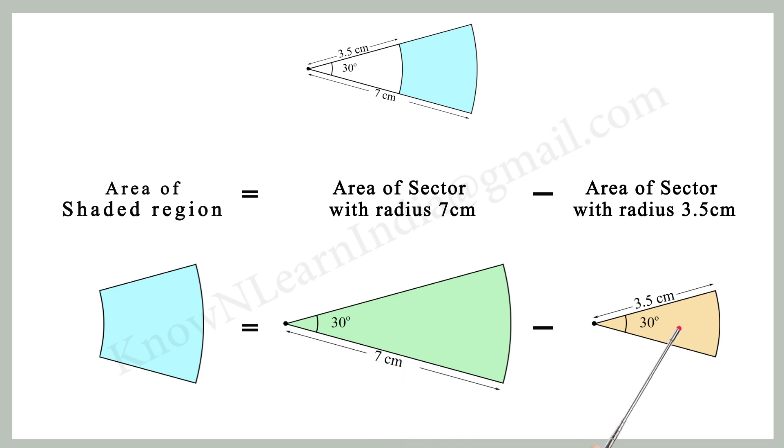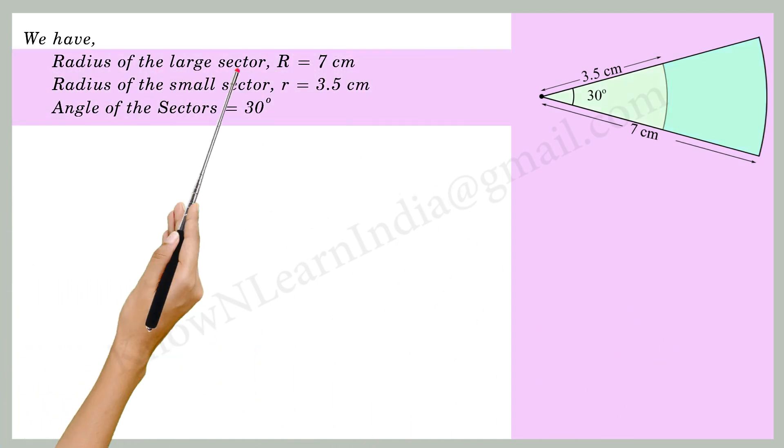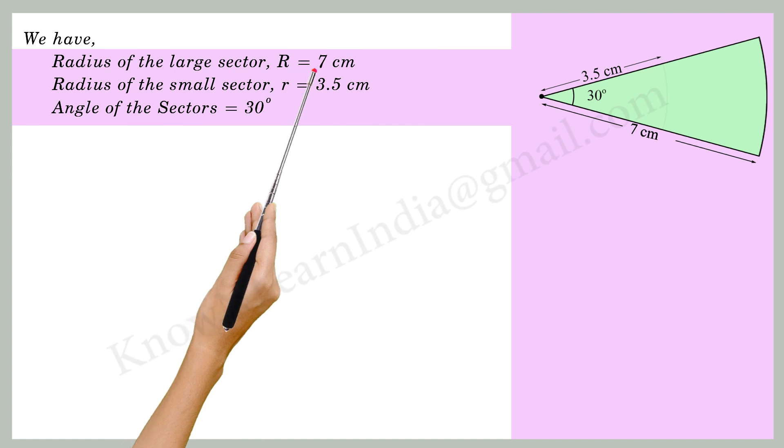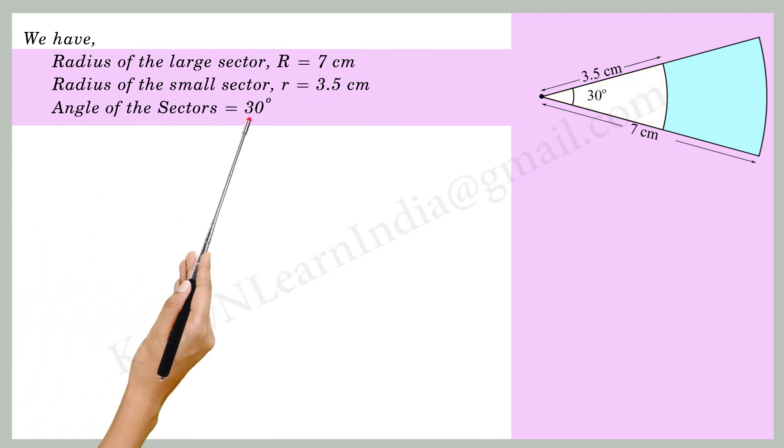Now let's move to calculations. We have radius of the large sector R is equal to 7 cm, radius of the small sector small r is equal to 3.5 cm, angle of the sectors is equal to 30 degrees.